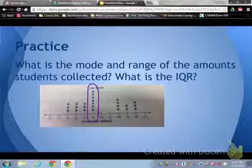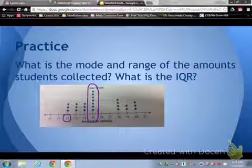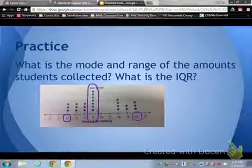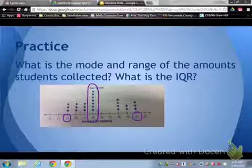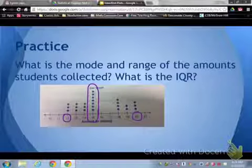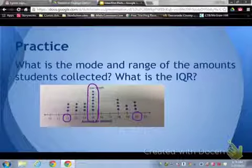For our range, we have to look at our lowest amount, which is here, and our highest amount, which is here. So we take 20 and 12 and we subtract to find our range, which gives us 8. So 8 would be our range.